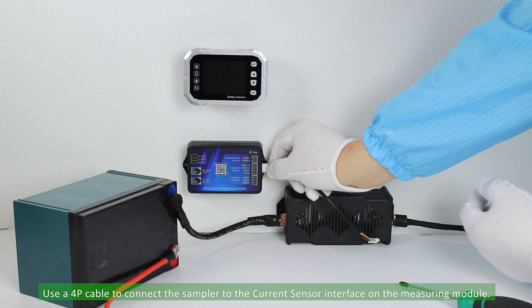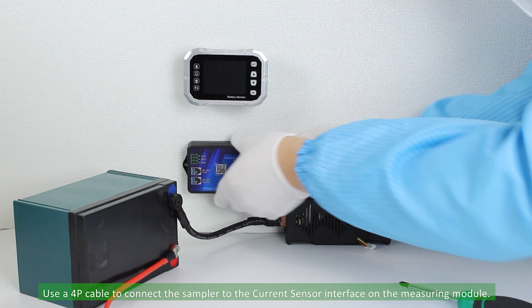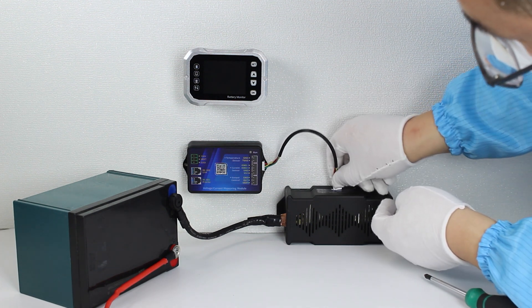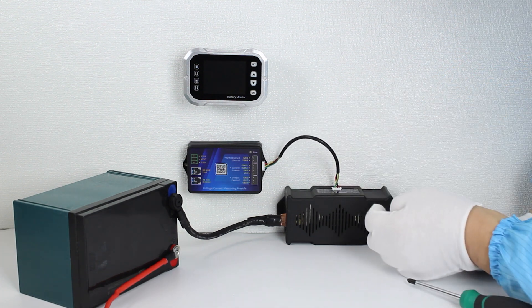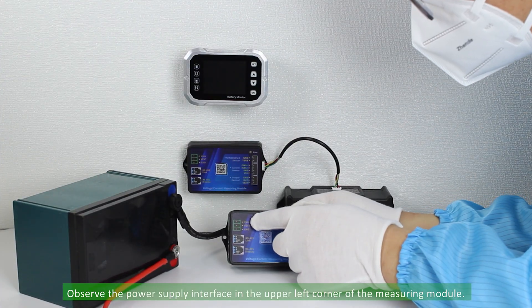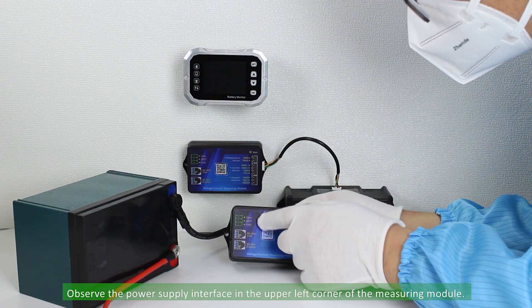Use a 4P cable to connect the sampler to the current sensor interface on the measuring module. Observe the power supply interface in the upper left corner of the measuring module.